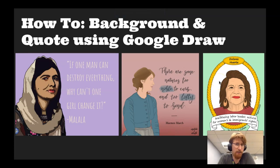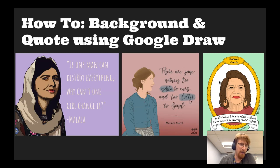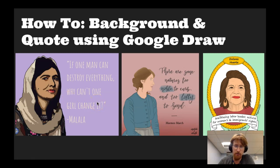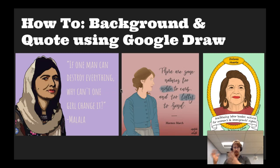Hello students. This video will demonstrate how to add a background and quote using Google Draw. We have been using Klecki for the illustration part of this to get the nice outline and get the colors and shading inside. But the text features and the layout features of Klecki are not as good as Google Draw, so I do want to demonstrate how you can take your photo from Klecki and get it into Google Draw and create a nice layout.